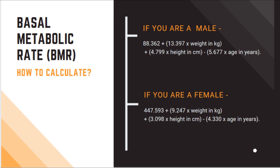How to calculate your basal metabolic rate? Don't get bogged down by the complicated-looking formula — you don't need to memorize it, but you surely need a calculator. Just fill in your details like your age in years, weight in kilograms, and height in centimeters, and you will get your BMR. All of us have different BMRs for the simple reason that our bodies digest food at different rates, though the basic digestive process remains the same.